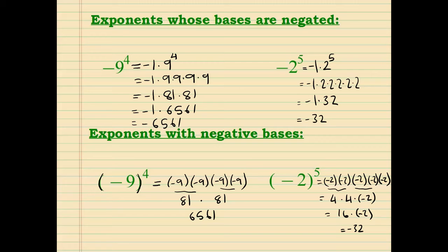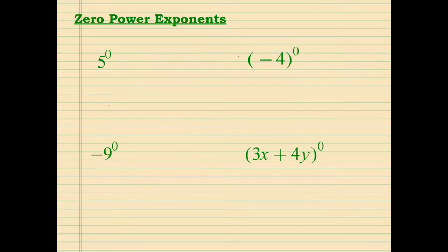Please take your time to understand and see the difference. On the first example, the exponent is touching only the 9 as the base, and the negative is out front. On the second example, the exponent is touching the parentheses, so whatever is inside the parentheses is considered the base.